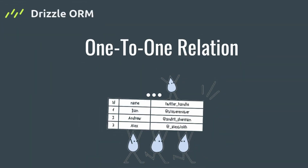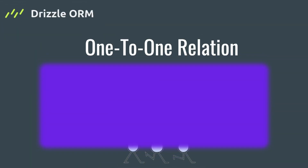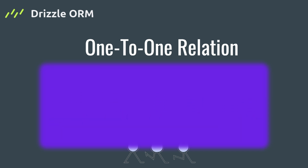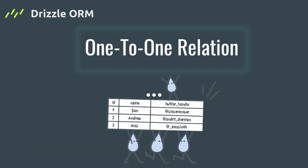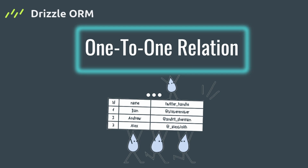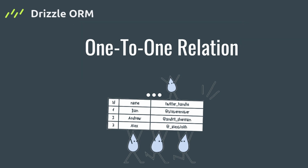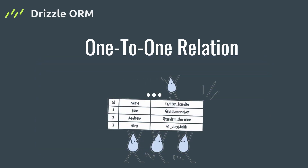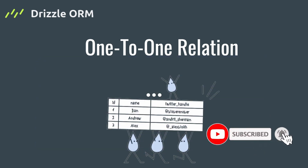Hey, what's going on developers, this is Sakura Dev Channel and welcome back to the Drizzle ORM comprehensive course. In this section I'm going to teach you how you can create a one-to-one relation between your tables with Drizzle ORM, and in the next episode I'm going to teach you how you can create one-to-many and many-to-many relations. Make sure to subscribe to the channel and hit the bell button to get informed about the next video.